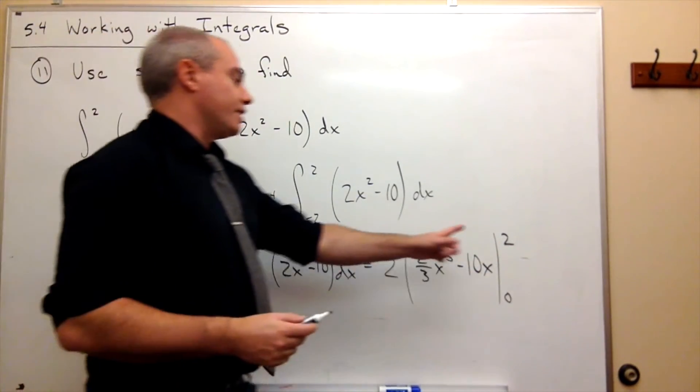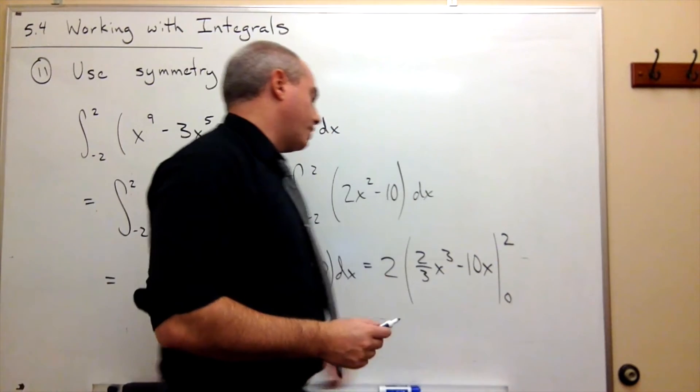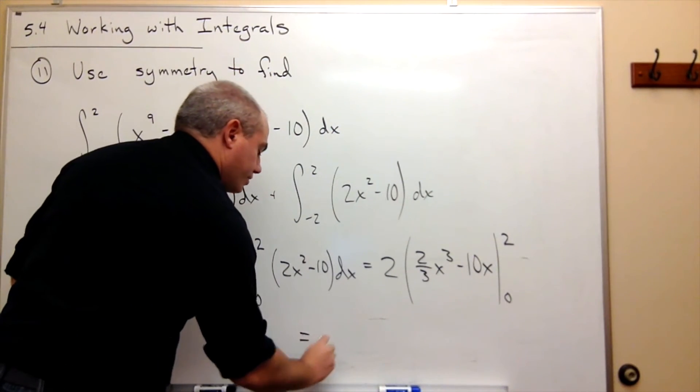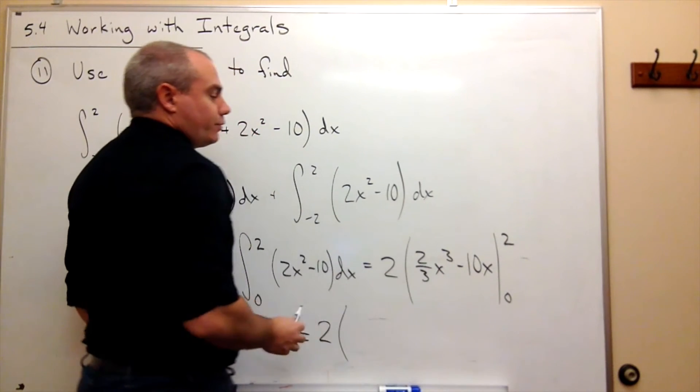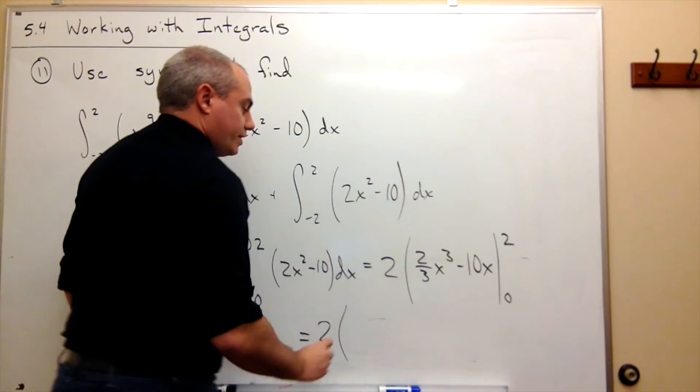So now I just need to plug in 2, subtract plugging in 0, and I get 2 times, if I plug in 2, I get 2 cubed, which is 8, times 2/3, which is 16/3.